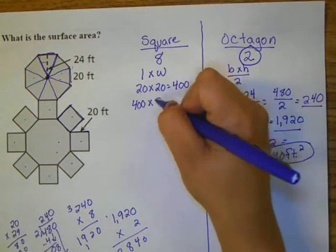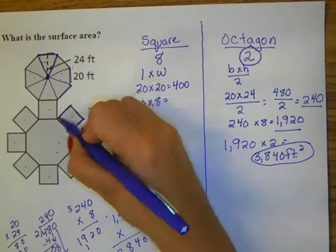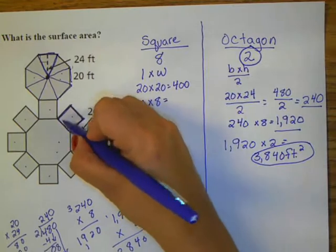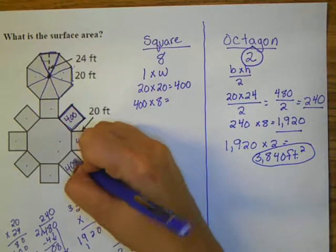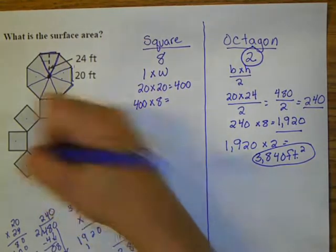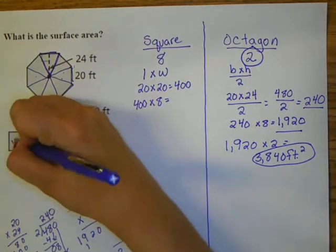There are eight squares, so I need to take 400 times eight, because each of these is now 400 square feet.